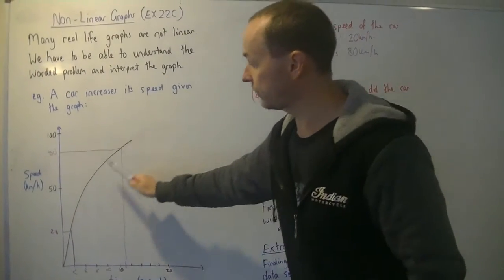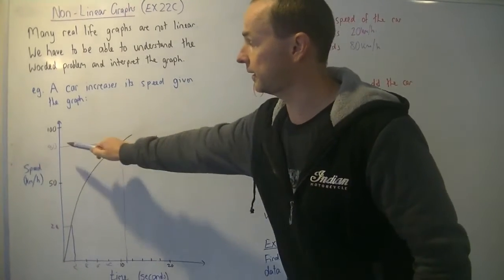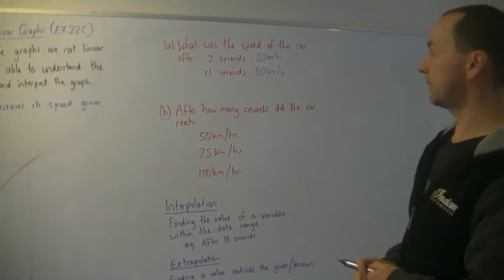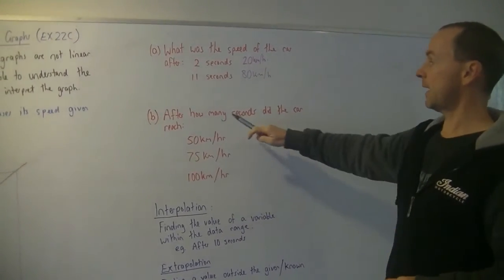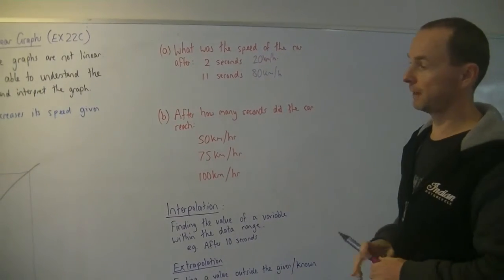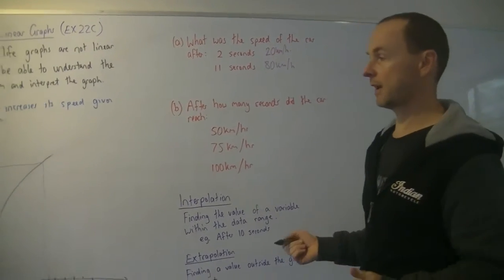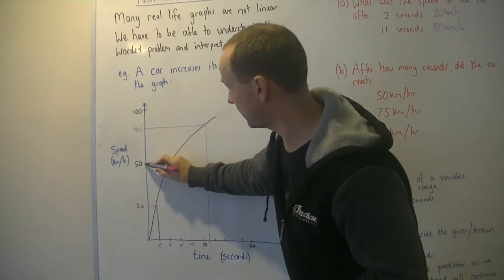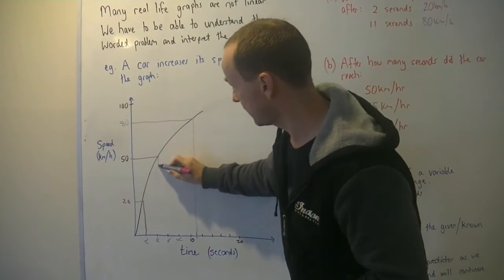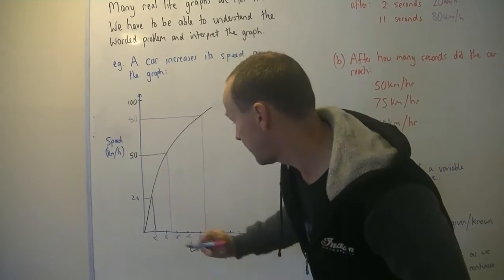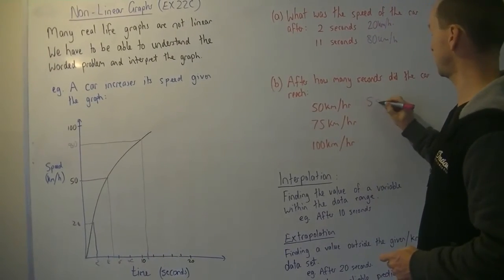So we're just using a value, using the line going up and predicting what the other value will be, what the other variable will be. Next bit, after how many seconds did the car reach 50 kilometres an hour? So it's exactly the same but in reverse. So there's 50 kilometres an hour. We go across and down using a ruler and I'm going to say that's 5 seconds, after 5 seconds.